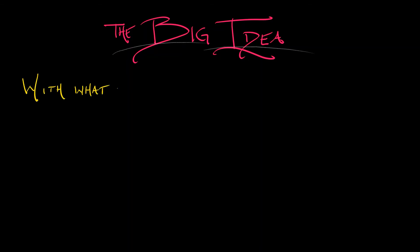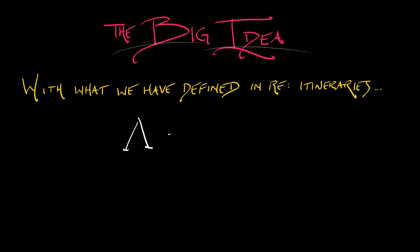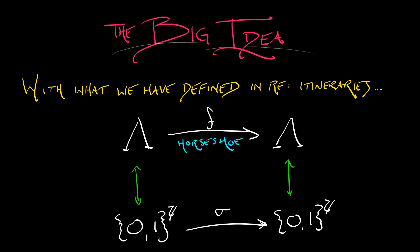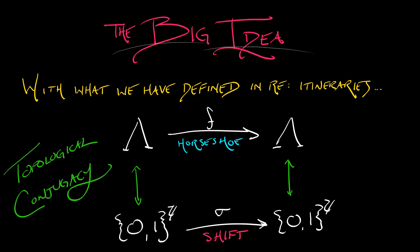The big idea is that with what we've defined with respect to itineraries, we can take that invariant set lambda for the horseshoe map, think about how that map acts on the invariant set, and we can build a correspondence to itineraries. We can take the set of bi-infinite sequences in two digits, zero and one, look at the shift map on that — the map that just moves the decimal point one place to the right and shifts all the digits to the left, forgetting nothing, because this is an invertible system. What we have is a topological conjugacy: the action of the shift map on bi-infinite sequences is really the same as the action of the horseshoe map on the invariant set.